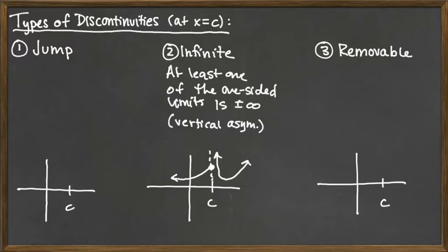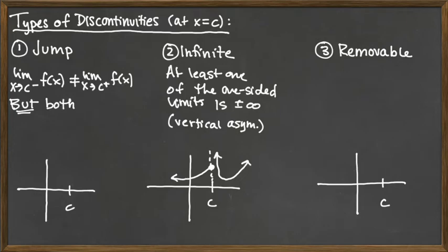For a jump discontinuity, we have that the limit as x approaches c from the left is not equal to the limit as x approaches c from the right. But both are finite. Now that's a key, but both are finite.